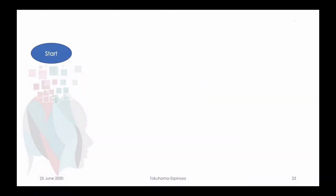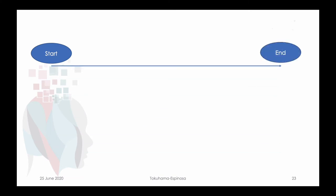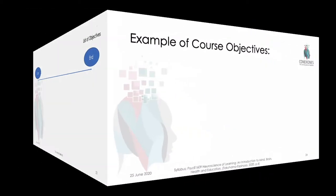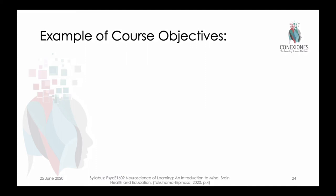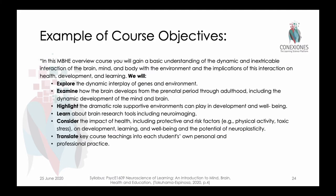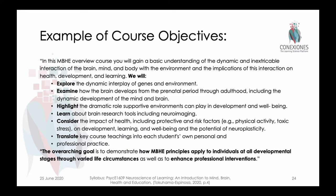As you do this first step of deciding where you want to be at the end of the semester and you decide your list of objectives, please keep in mind this longer list of knowledge, skills, and attitudes. In our syllabus, objectives look like this — they're generally started with action verbs: we're going to explore, examine, highlight, learn, consider, and translate different information. We also give students the hook of an overarching goal — what is the overarching goal of the class?